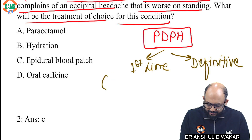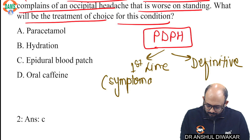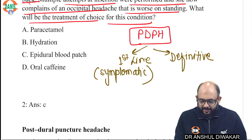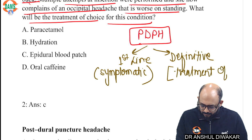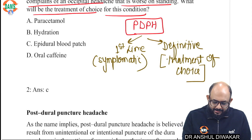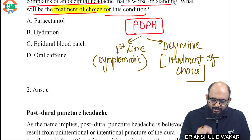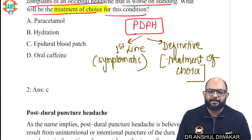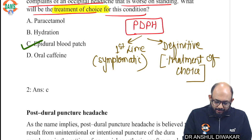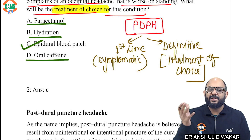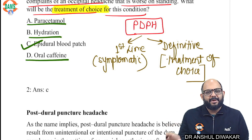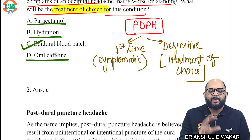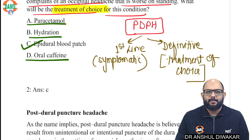The first line management is symptomatic, while the definitive management is the treatment of choice. The question asks for the treatment of choice — that is the management that addresses the pathology, which is the epidural blood patch. You can give paracetamol, you can give oral caffeine — yes, all these things can be done as first line symptomatic management. But whenever you hear 'treatment of choice,' 'best treatment,' 'definitive treatment,' or 'last resort,' the answer is epidural blood patch.